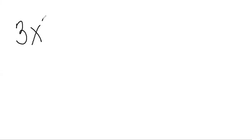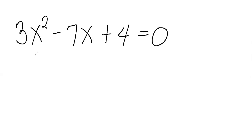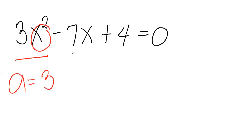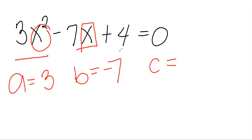So let's say we're given the quadratic equation 3x squared minus 7x plus 4 equals 0. This quadratic equation is already written in its standard form, where the value of A is the coefficient of x squared, which is 3. The value of B is negative 7, which is the coefficient of x. And the value of C is the constant, which is 4.